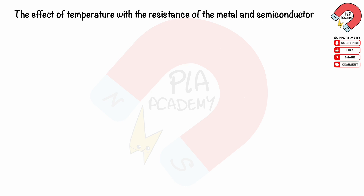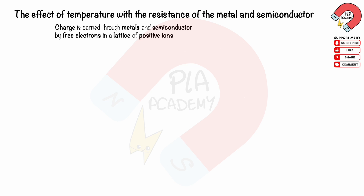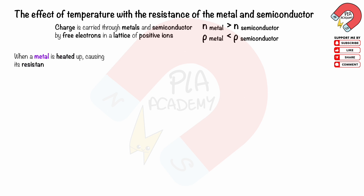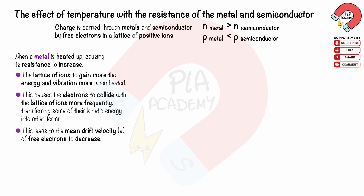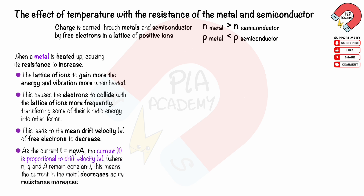The effect of temperature on the resistance of metals and semiconductors. Charge is carried through metals and semiconductors by free electrons in a lattice of positive ions. The number of charge carriers in the metal is more than in the semiconductor, indicating that semiconductors have a higher resistivity than metals. When a metal is heated up, the lattice of ions gains more energy and vibrates more. This causes electrons to collide with the lattice of ions more frequently, transferring some of their kinetic energy into other forms. This leads to the mean drift velocity V of free electrons decreasing. As current I equals NQVA, and current I is proportional to drift velocity V where N, Q and A remain constant, the current in the metal decreases so its resistance increases.